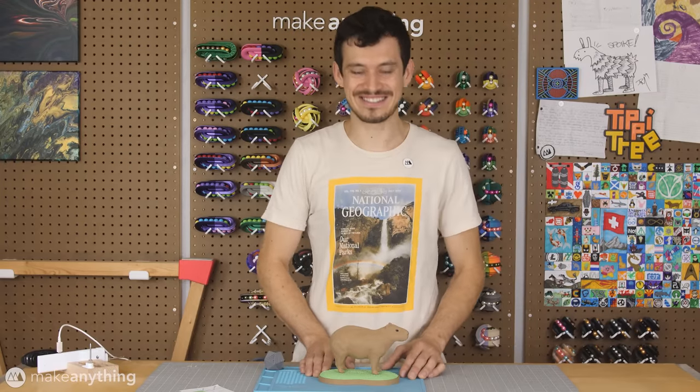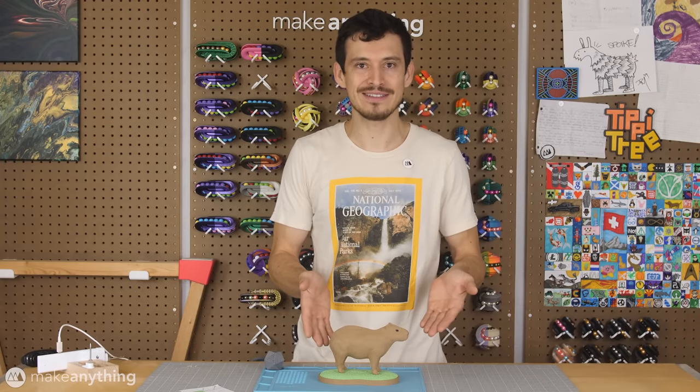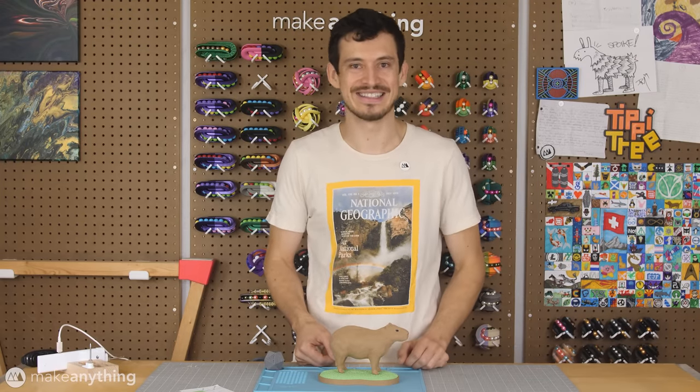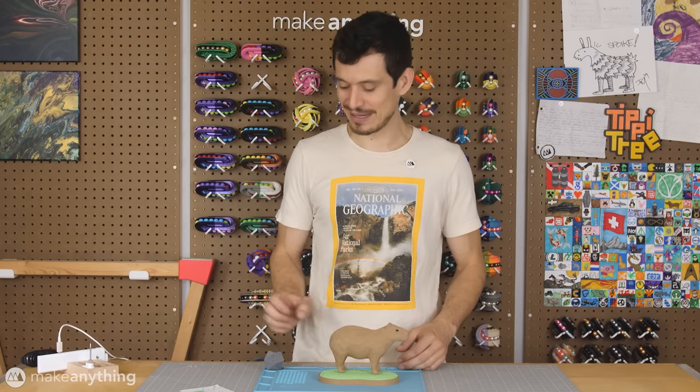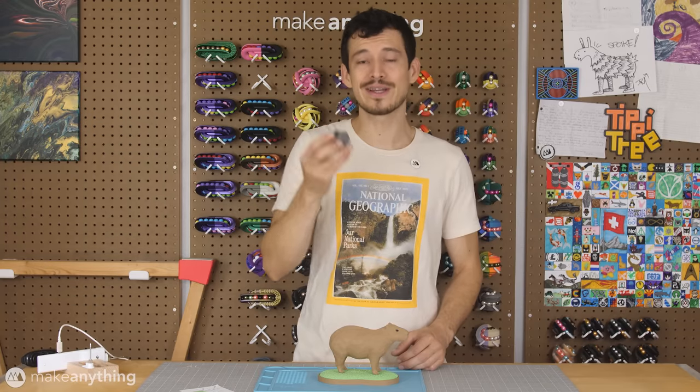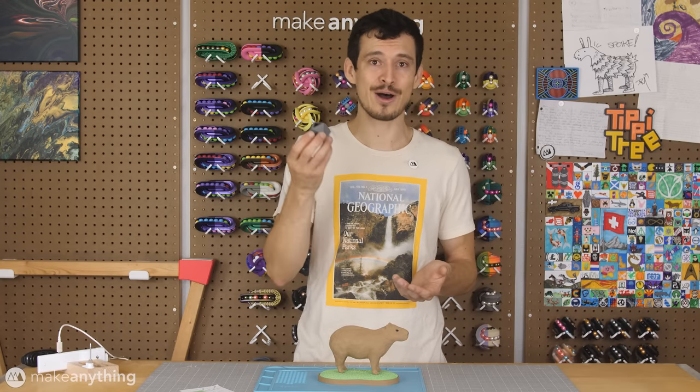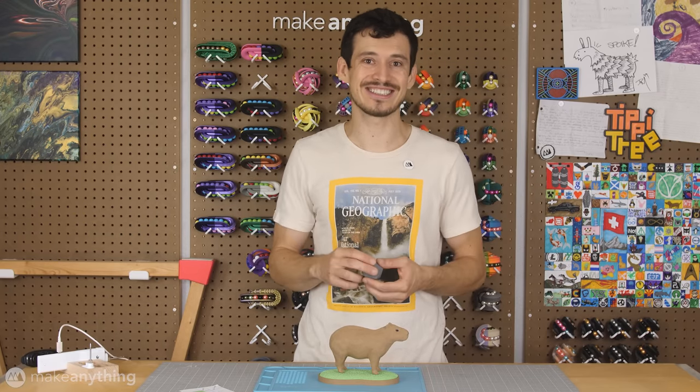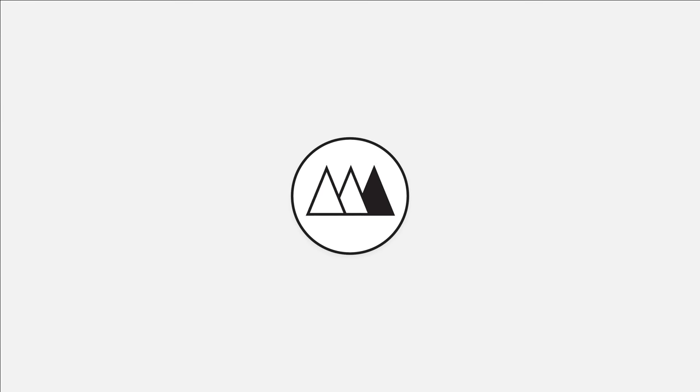And there we have it. Our fuzzy capybara now has some fuzzy grass to graze upon. Of course, as you saw in my little icosahedron demo, there's a lot more we can do with this technique, so I'd love to hear your ideas. What models and textures will you try? Let me know in the comments below, or better yet, join the Make Anything Discord community and share your results. Alright, that's it for this video. Thank you so much for watching, take care, and as always, stay inspired. I'll see you next time.